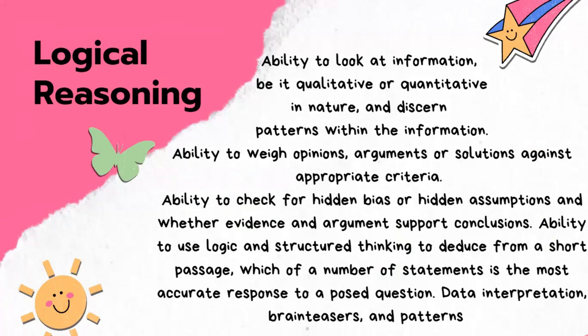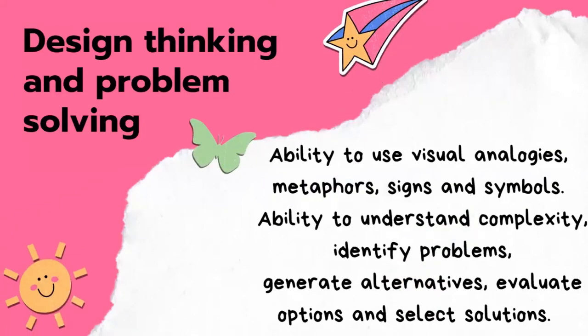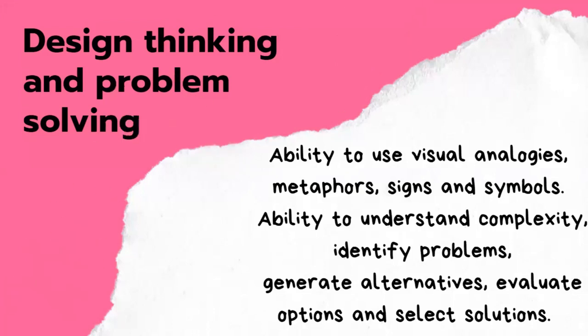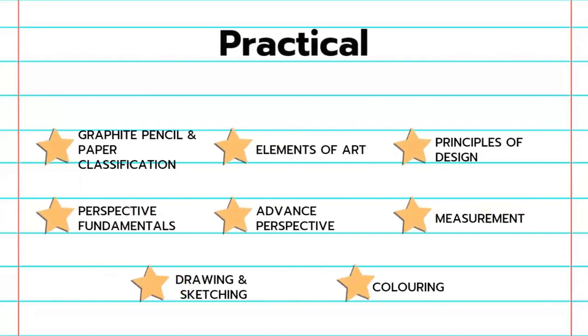Logical reasoning also includes data interpretation, brain teasers, and patterns. Design thinking and problem solving covers the ability to use visual analogies, metaphors, signs, and symbols; the ability to understand complexity and identify problems; generate alternatives; evaluate options; and select solutions.